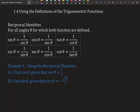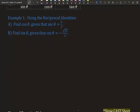Section 1.4: using the definitions of the trigonometric functions — reciprocal identities. Sine θ equals one over cosecant θ, so cosecant θ equals one over sine θ. These are just reciprocals of each other. Cosine θ equals one over secant θ, and secant θ equals one over cosine θ. Tangent θ equals one over cotangent θ, and cotangent θ equals one over tangent θ. We're going to be using these reciprocal identities.